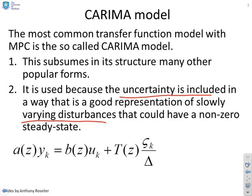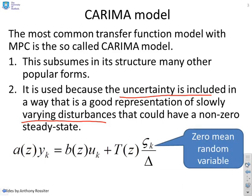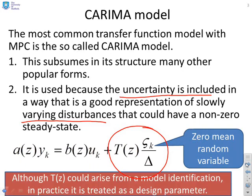So here's the CARIMA model. You'll see we have a(z)y equals b(z)u plus t(z)zeta over delta. The key thing is this extra term on the right. Zeta is a zero-mean random variable, so zeta over delta represents slowly varying disturbances, and in particular t(z) is considered as a design parameter. You could identify t(z) from a formal identification procedure, but what people find is it's better to treat it as a degree of freedom because it affects the control design.